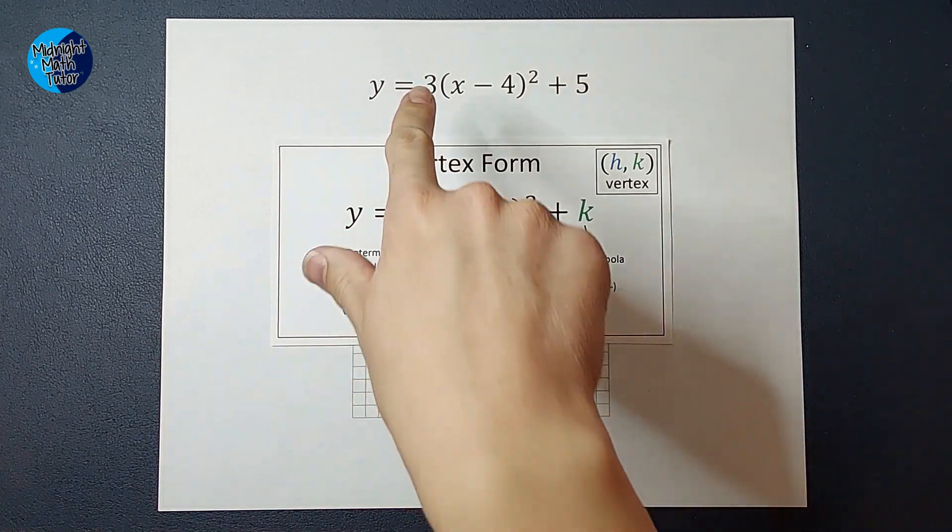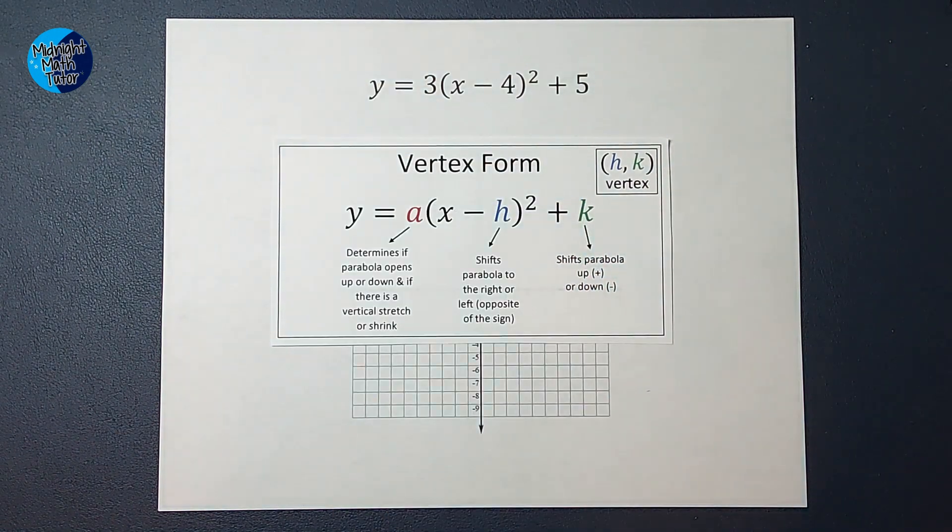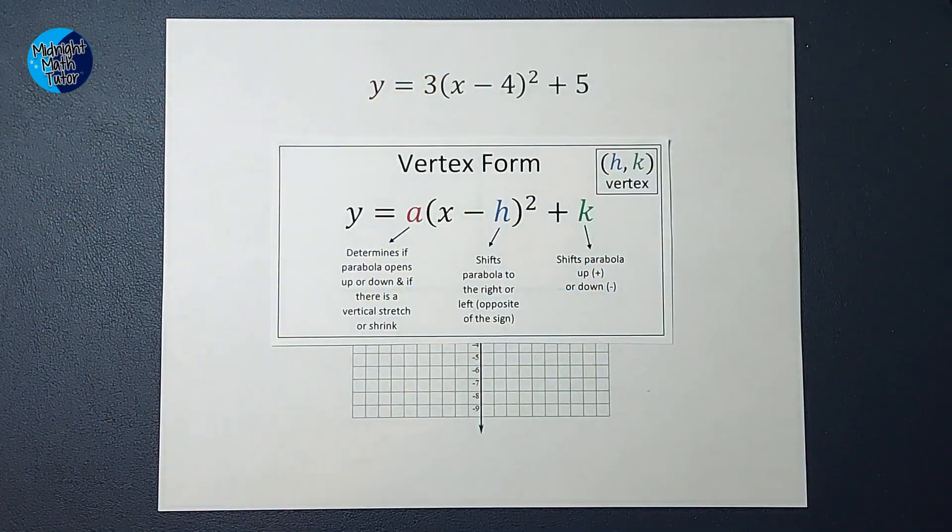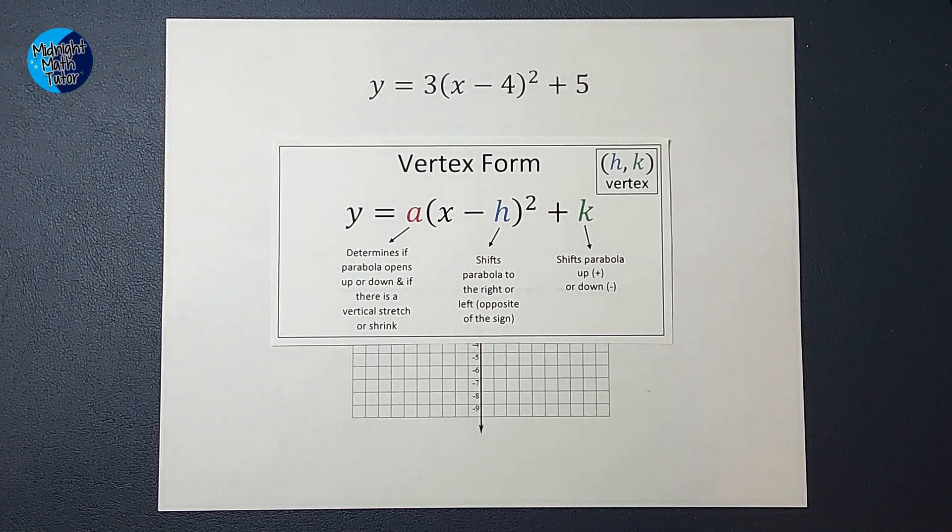So the number, if there is a number out front, in front of your parentheses, that number will affect two things. If it's positive, your parabola is opening up. If it's negative, your parabola opens down, kind of like a frowny face. If there is a number or a fraction in front of it, that affects what your parabola looks like, and let me show you.